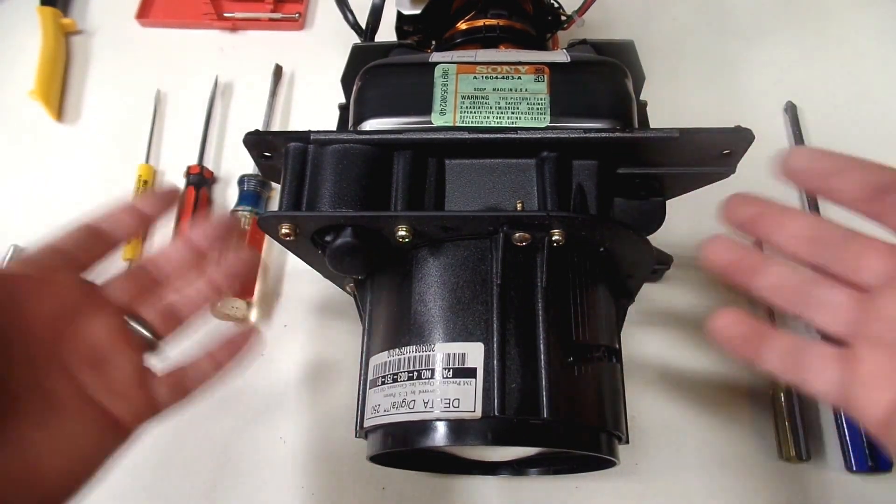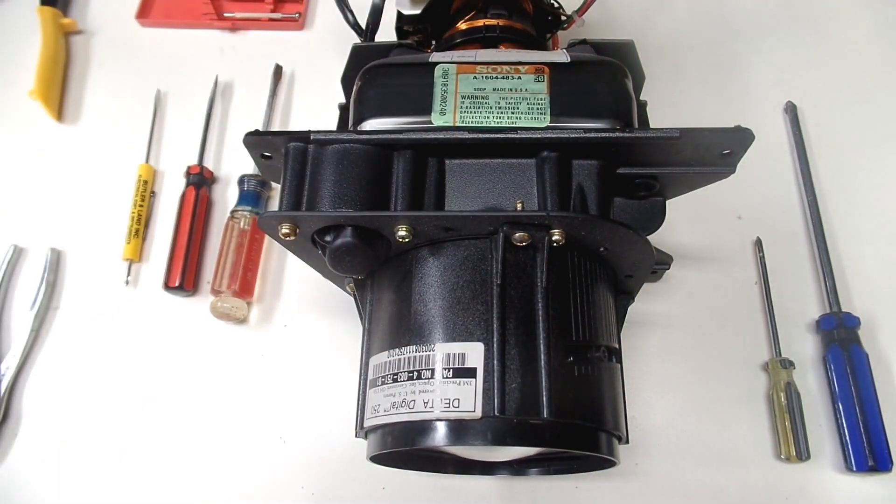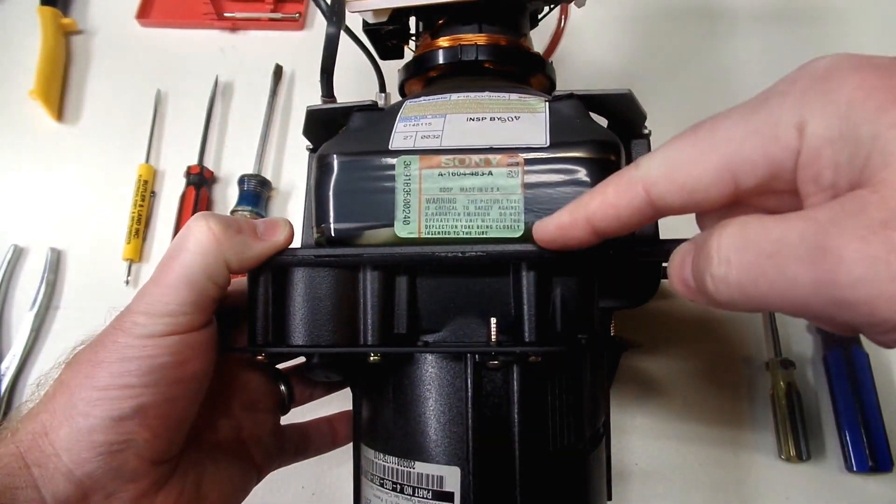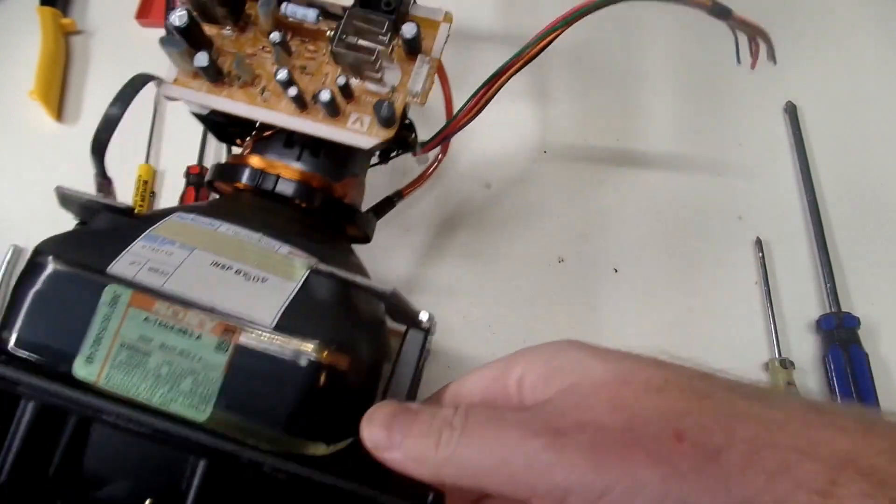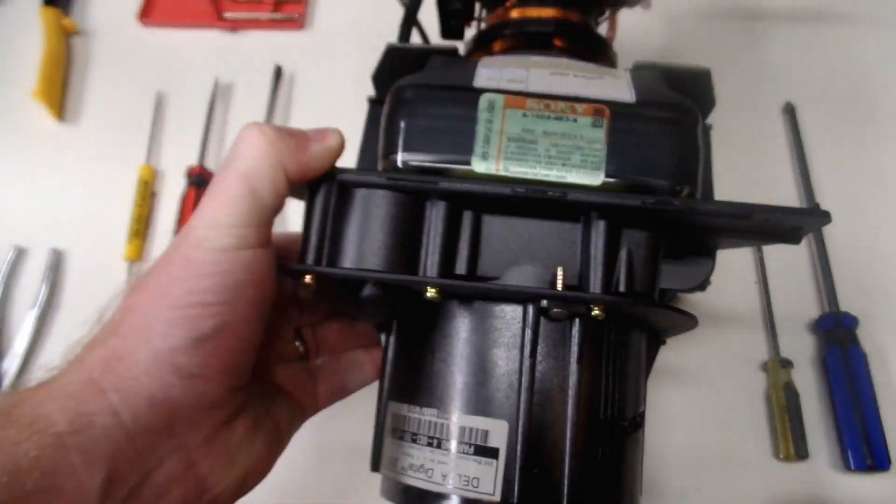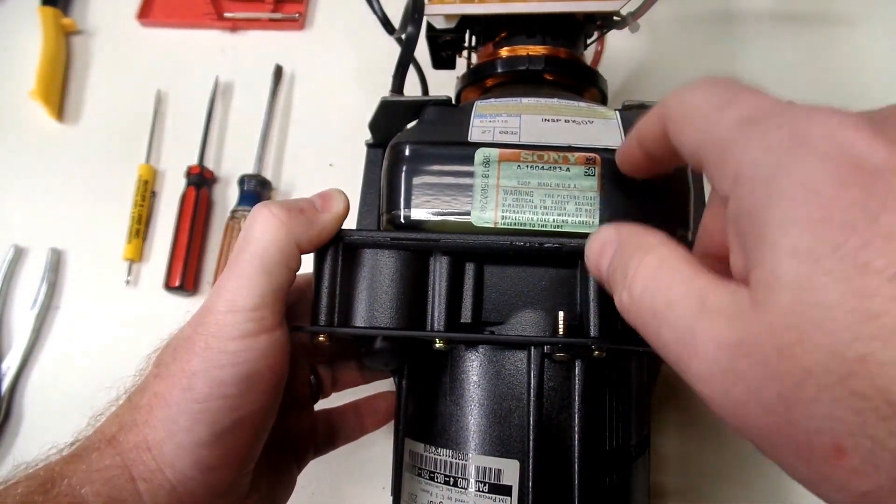So this is, if you took the TV apart, which I did, and there's the video. I'll link it up there. Now this is what you see and basically from here to here is basically what you would see in an old tube TV. And that's exactly what this is, is a cathode ray tube.